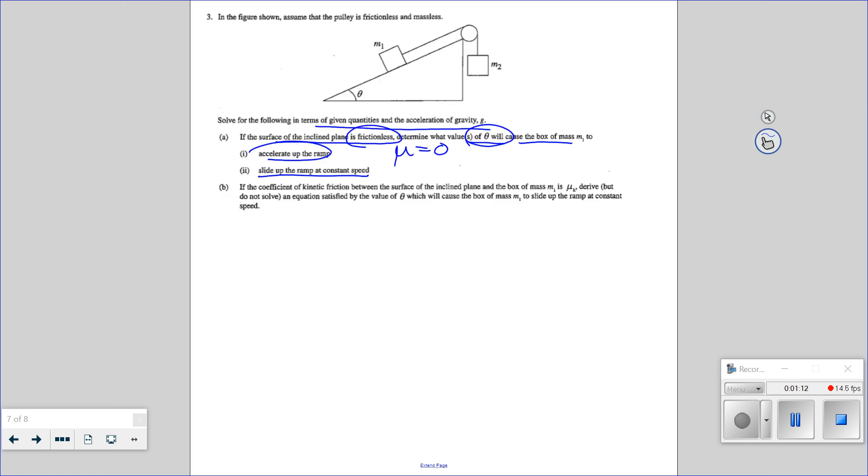M1, it'll have a normal force. The normal force will be counteracted, we went over yesterday, by mg cosine theta. Since we don't have a friction, we don't really need that. We're going to have a force of tension, and we're going to have mg sine theta down.